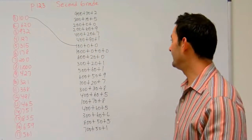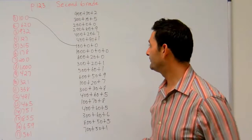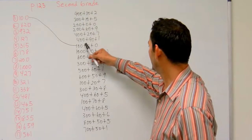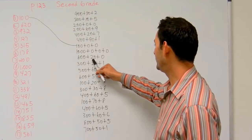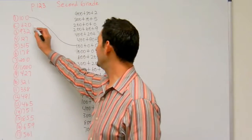Now I've got 620 for number 2. So I'm looking for 600 plus 20 plus 0. 600 plus 20 plus 0, that's it.